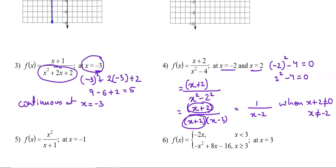At x = -2, because x + 2 is the common factor, we get removable discontinuity. The common factor always gives removable discontinuity. After simplifying, we get 1/(x-2) as the rational function, and the denominator being 0 makes an infinite discontinuity — it creates a vertical asymptote.